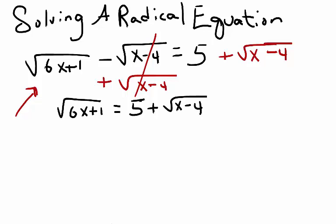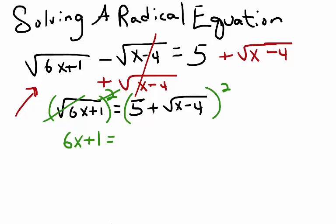My next step is to square both sides. When I square the square root, I end up with an expression to the first power — 6x plus 1 in this case — equals 5 plus the square root of x minus 4, raised to the second power. There are two terms, which makes this a binomial.